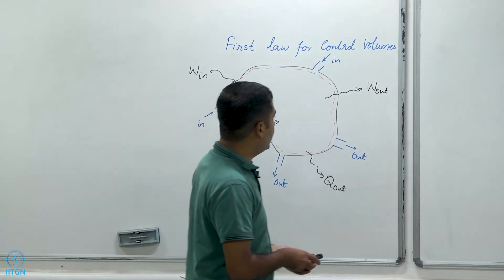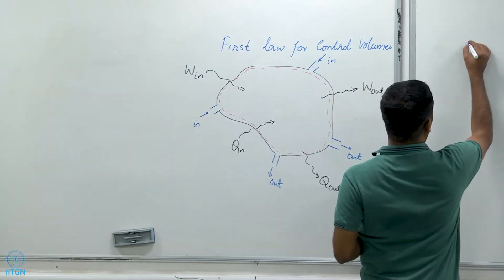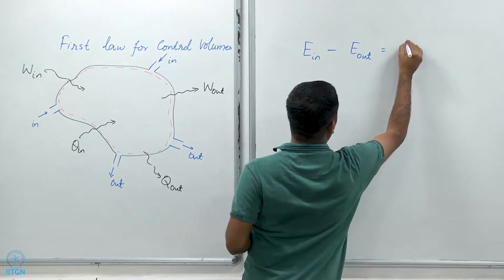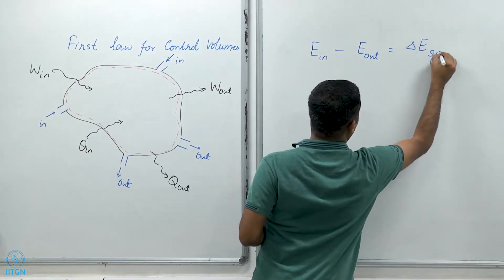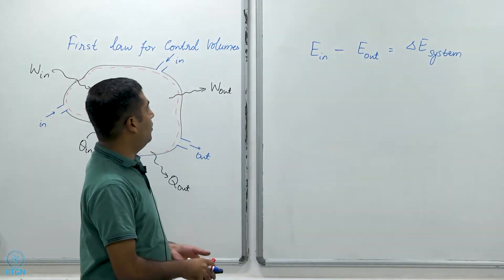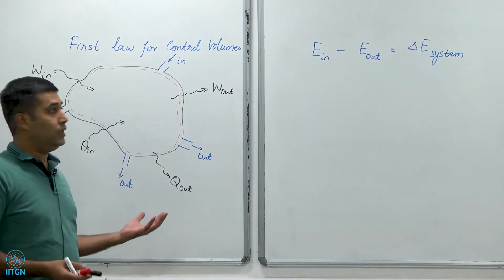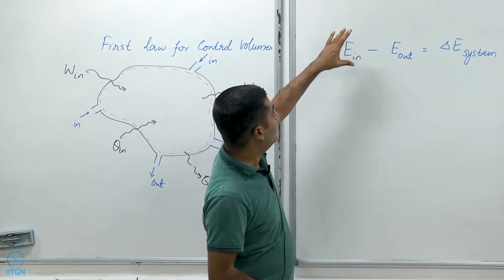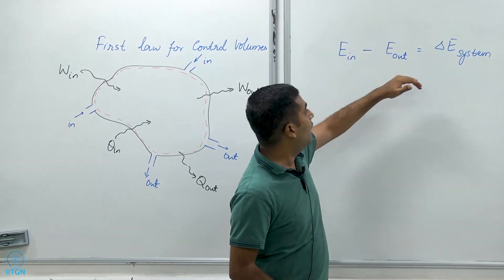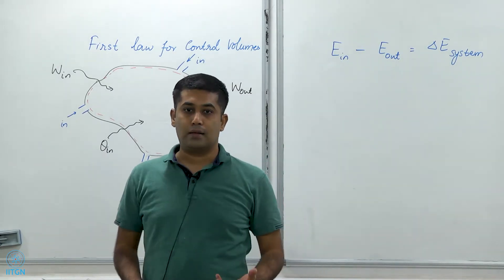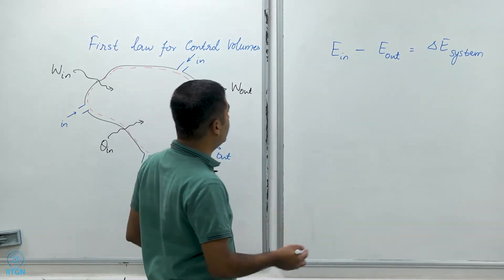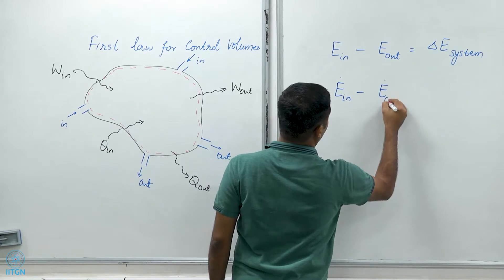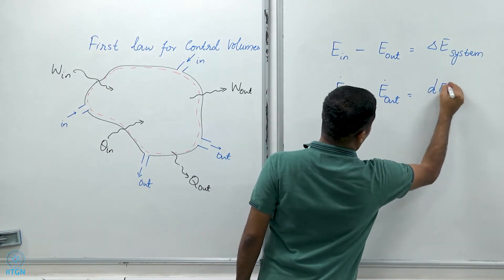If I write the energy conservation for this system, then I must have energy coming in minus the energy going out equal to the change in energy of the system. Let's say I watch the system over a period of time delta T, and during this time delta T, the energy that came into the system was E_in, energy that went out is E_out, and the change in energy of the system is delta E_system. If I differentiate this, I can also write E_dot_in minus E_dot_out equals D E_system / DT.